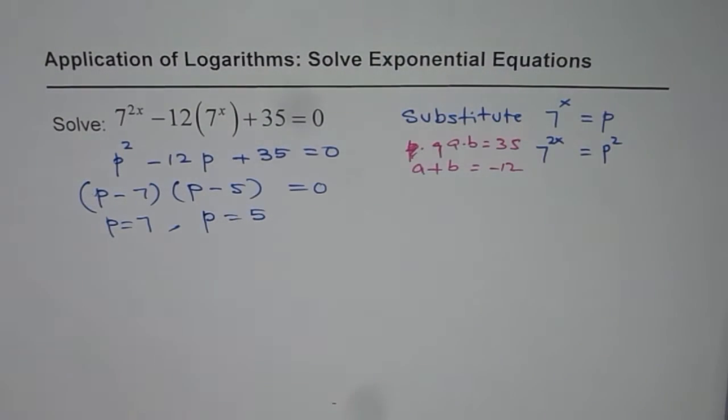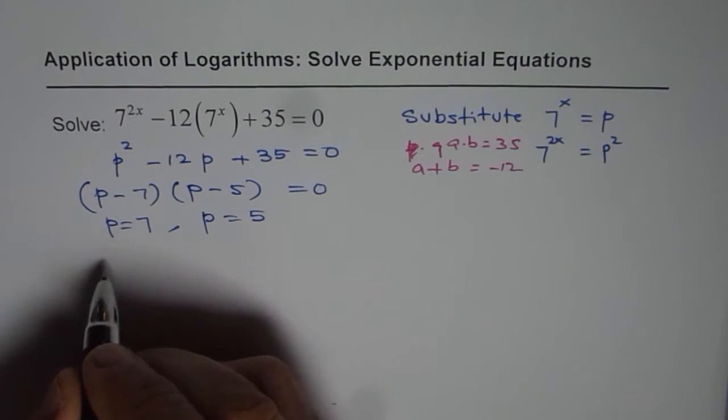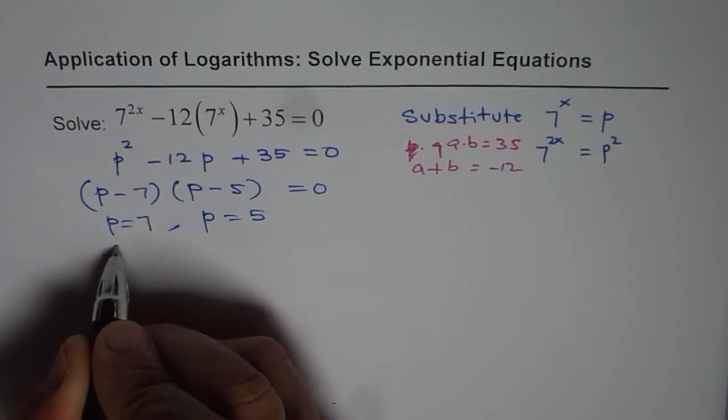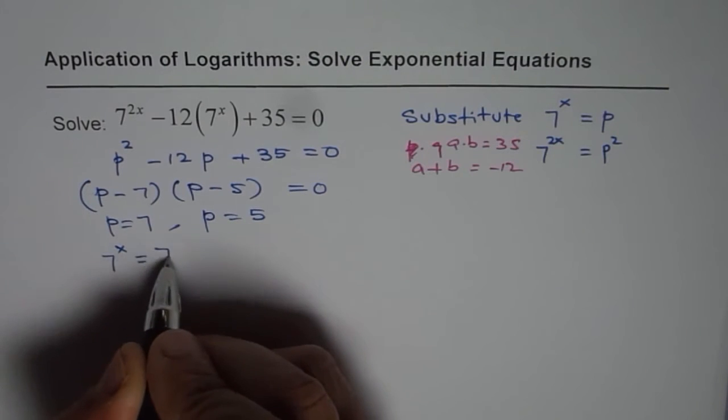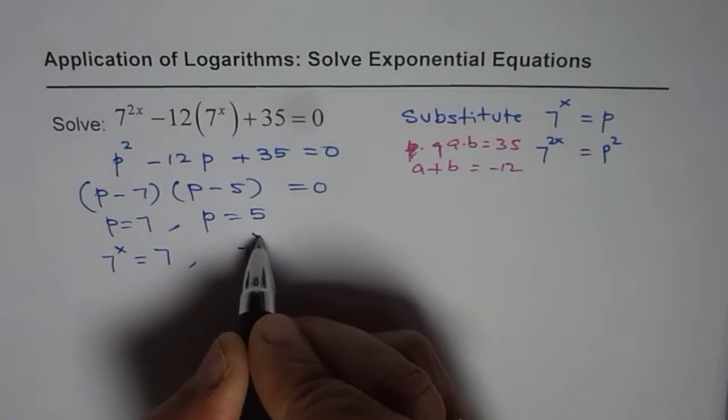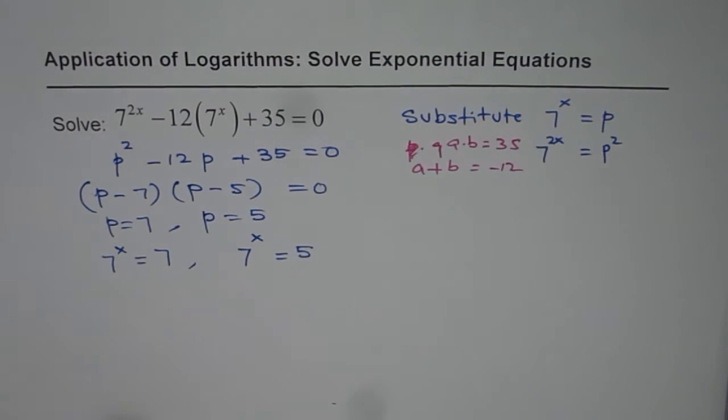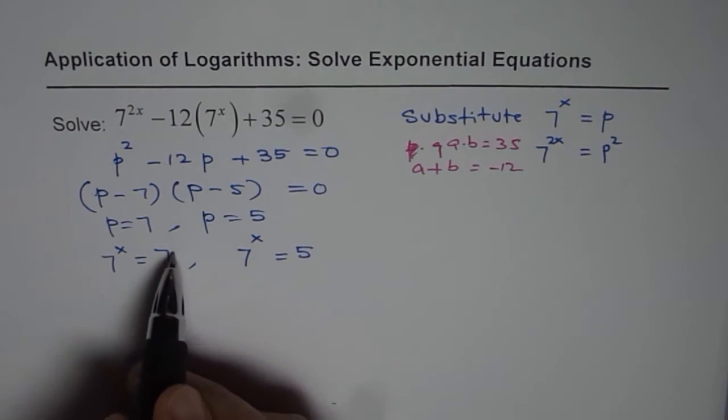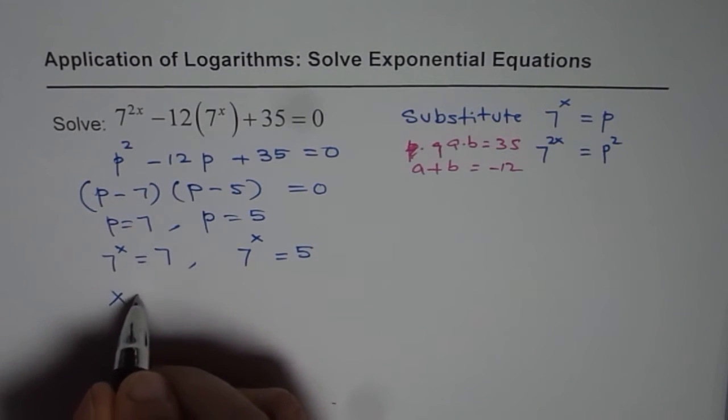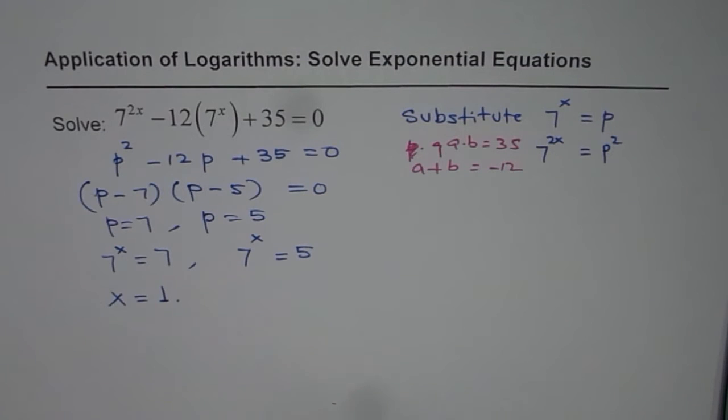So we have two solutions. Now p is 7 to the power of x, so we can write 7 to the power of x as equal to 7. That is one solution or we could write 7 to the power of x as equals to 5. Now 7 to the power of x equals to 7, it means x is equals to 1. That's simple. So this is one of our solutions.